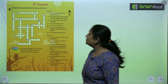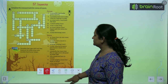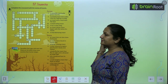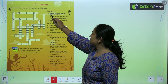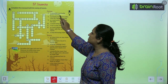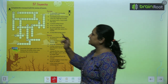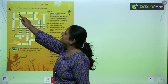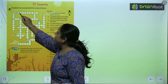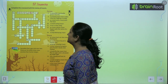The first clue is across — across means you go left to right. The clue is: a caterpillar eventually grows into this. Toh caterpillar kis mein develop kar jata hai? It will start with B. So it can be butterfly. Butterfly.